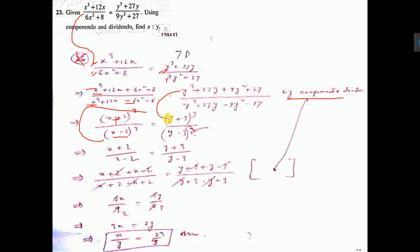Similarly, this one also y plus 3 whole cube. You break down, this one will come. Y minus 3 whole cube breakdown, you will get this one. That is why it is written. Now from both sides, if you remove cube, then x plus 2 by x minus 2 equal to y plus 3 by y minus 3.